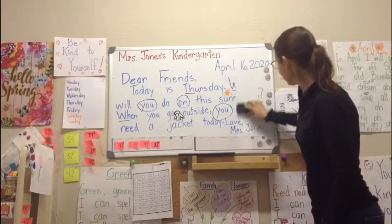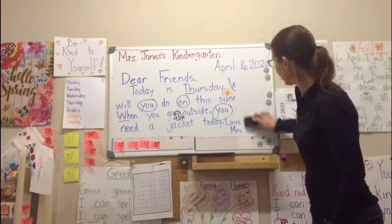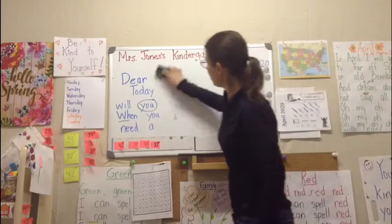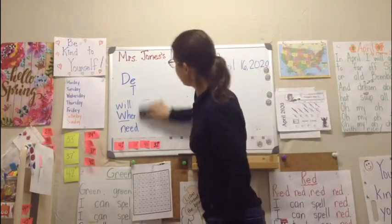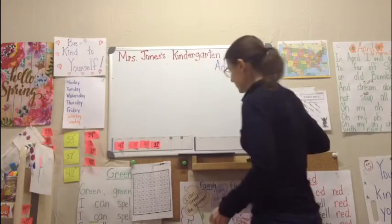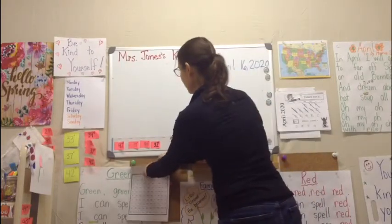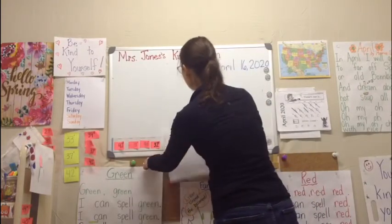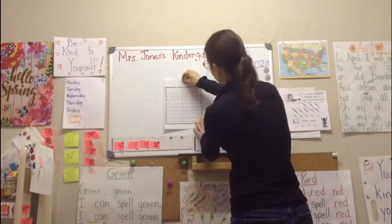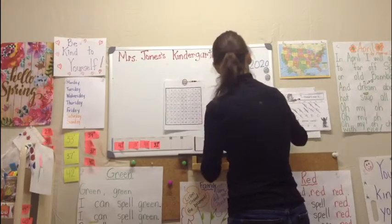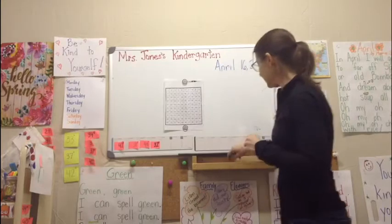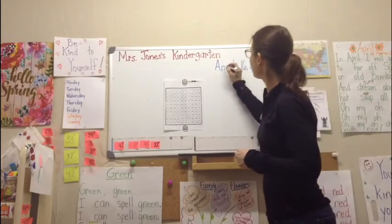Alrighty. So today we're going to take a look at our digraphs and work a little bit more on our Friday fruit party — lots to do today. Before we do, I'm going to pull our number grid up so that we can see that currently we are in the tricky teens for our month of April.